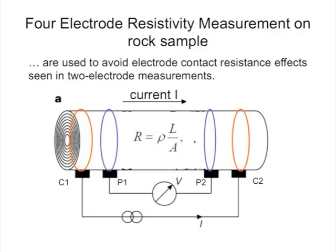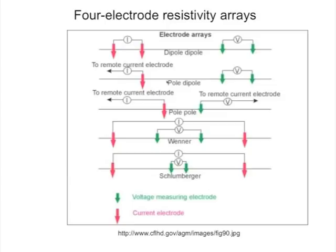Resistivity measurement in the ground is really not very different from this. We set up current electrodes, and here in general is what's called the dipole-dipole array. We set up current electrodes somewhere, and somewhere else — maybe between them, maybe outside them — we set up our voltage electrodes, our potential electrodes in green, which measure the voltage differences between them. This is how all DC electrical resistivity surveys proceed, and you can do these in 2D and 3D. We have software from Multiphase Technologies that allows us to make a 3D image of resistivity variations in the subsurface.